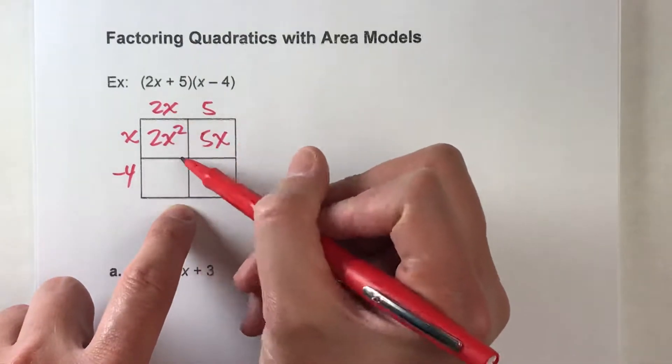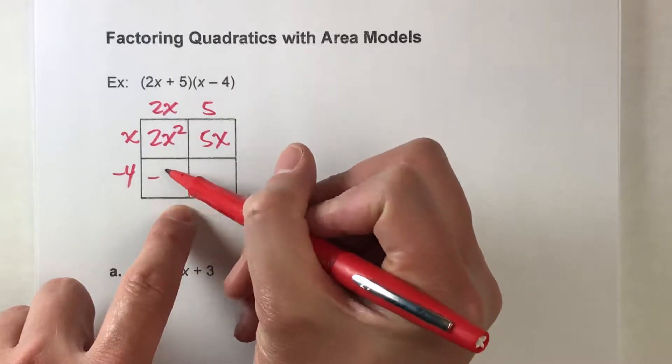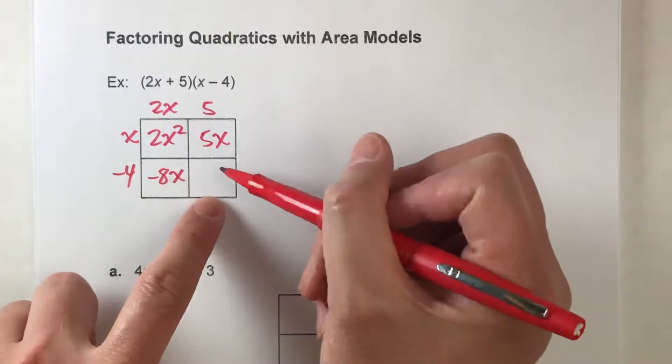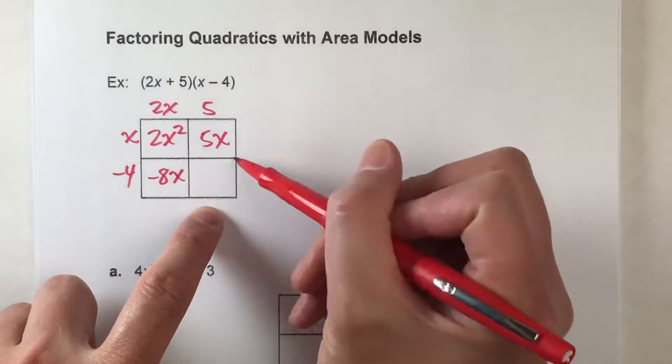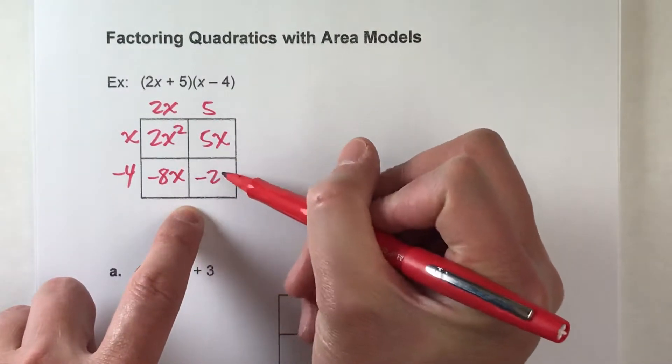Down here, this length is 2x and this length is negative 4. So 2x times negative 4 is negative 8x. And then for this box right here, we've got 5 times negative 4, which is negative 20.